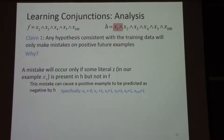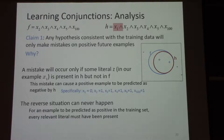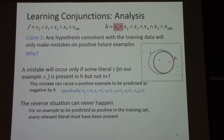Here's an example that forces h to make a mistake: when x1 is 0 and x2, x3, x4, x5, and x100 are 1, f will still predict it as positive because x2, x3, x4, x5, and x100 are available, but h will predict it as negative. This is the only kind of mistake that h can make. The opposite can never happen because h contains a superset of the variables. This blue circle represents all the set of points that f will label as positive; the red circle is a strict superset — by adding another element to the conjunction, you reduce the set of things you label as positive. So, any hypothesis consistent with the training set produced by the elimination algorithm will never make mistakes on negative examples.